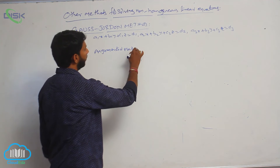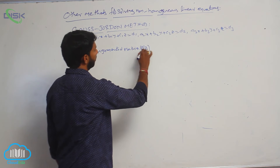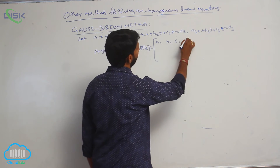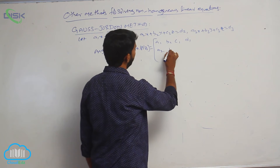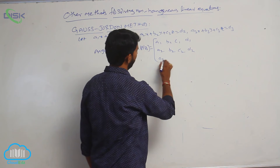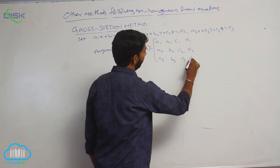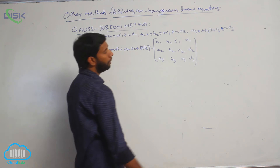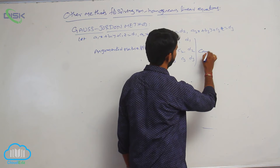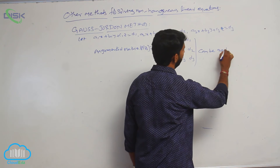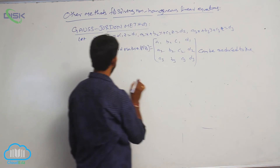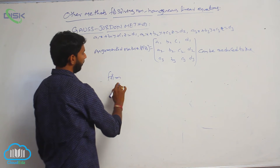The augmented matrix [A|B] is equal to: a1 b1 c1 d1 / a2 b2 c2 d2 / a3 b3 c3 d3. This is called the augmented matrix, and it can be reduced to a specific form.